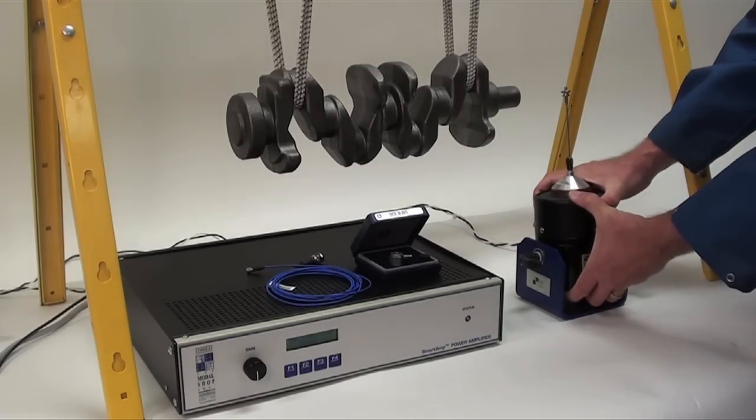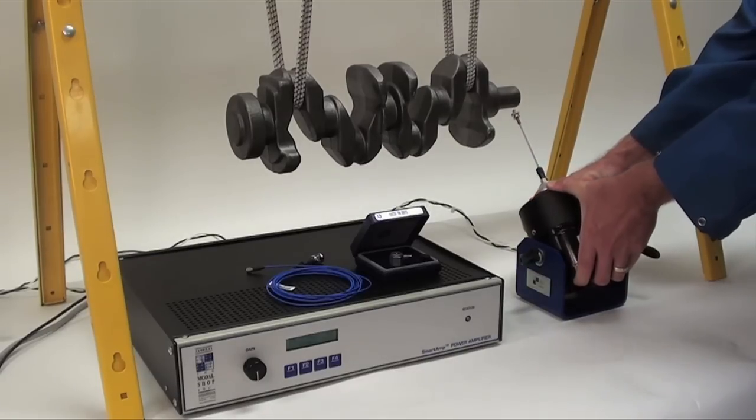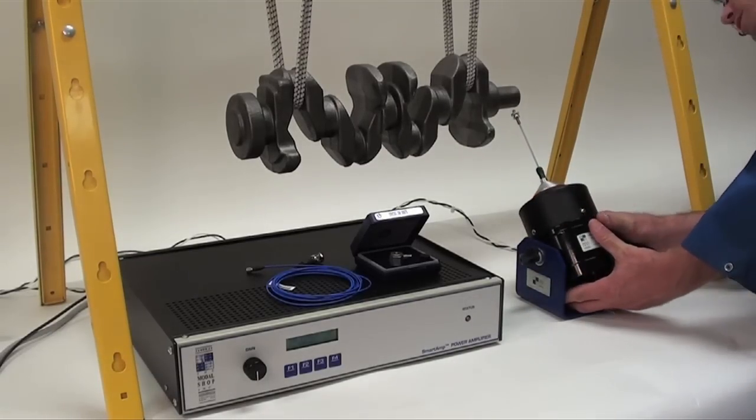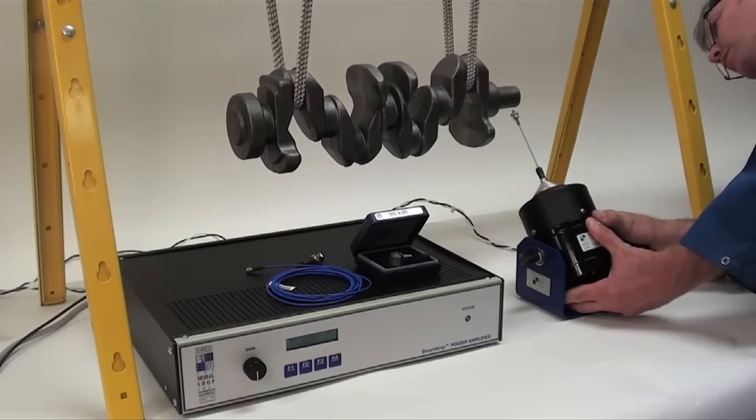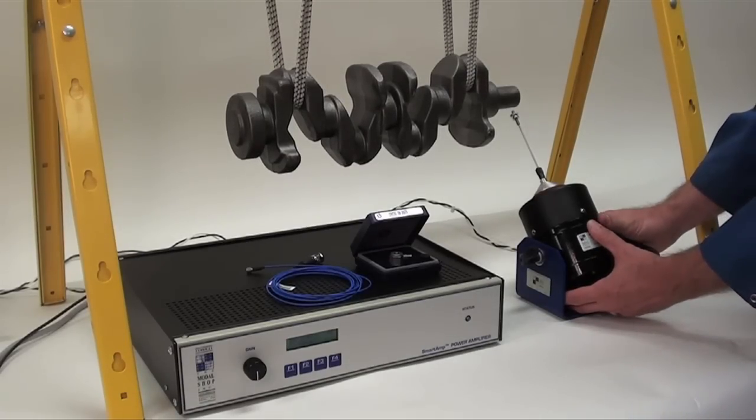And we'll adjust the shaker body in the trunnion such that we'll be exciting at about a 45 degree angle so that we can get both a horizontal and a vertical input.